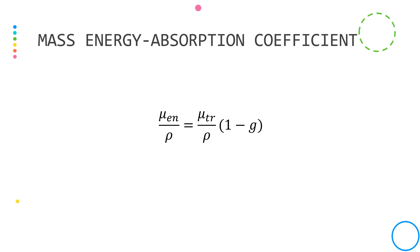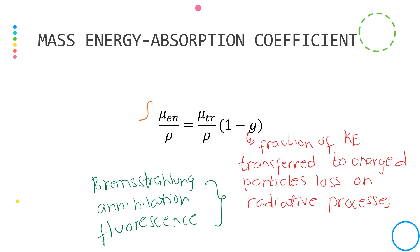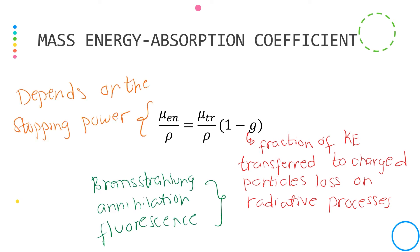The product of mass-energy transfer coefficient and the quantity (1-g) is called the mass-energy absorption coefficient, where g is the fraction of kinetic energy transferred to charged particles that is subsequently lost on average in radiative processes such as bremsstrahlung, in-flight annihilation, and fluorescence radiation. The mass-energy transfer coefficient also has a dependence on stopping power.